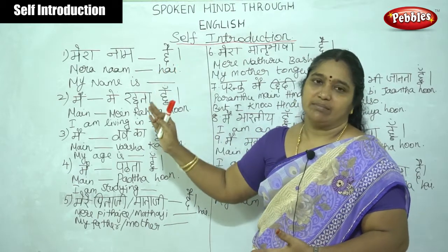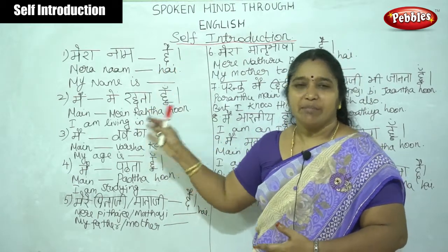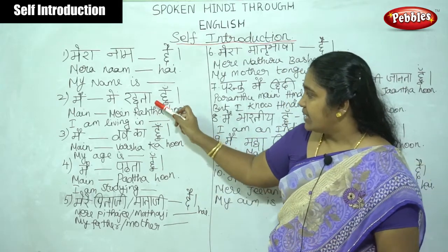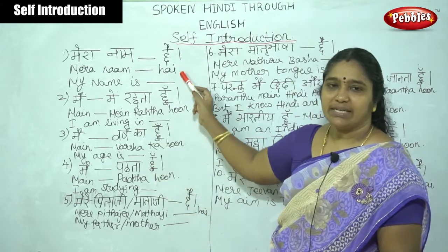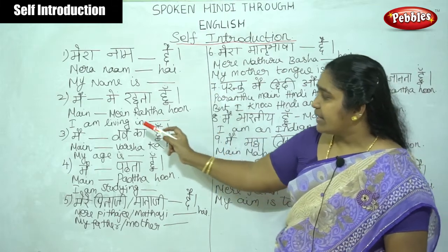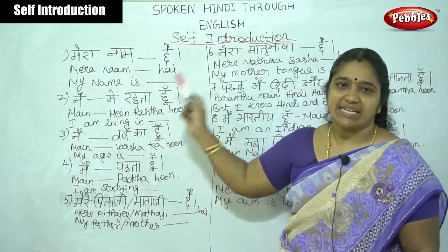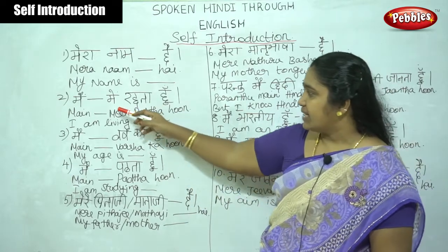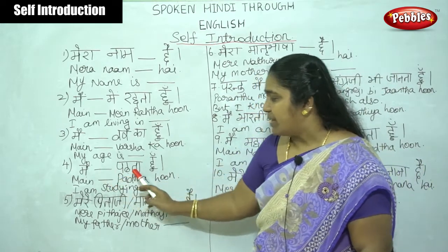Let's go through the steps again. 'Mere naam dash hai.' 'Mai dash varsha ka hoon.' 'Mai B.E. padta hoon.' Note that 'rehta' and 'padta' are used in a masculine manner. For feminine, a girl would say: 'Mai Mumbai me rehti hoon.' 'Mai B.E. padti hoon.'